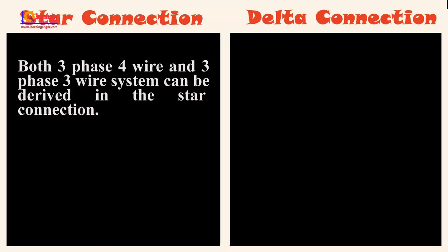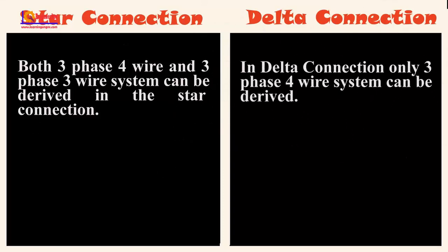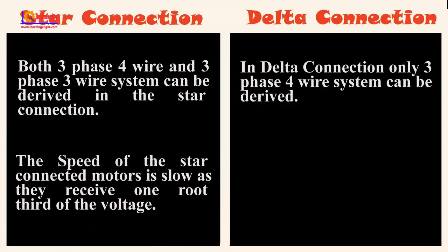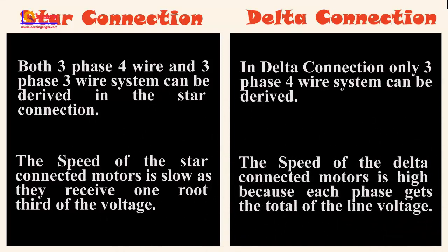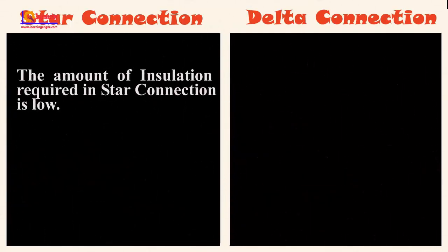Both three-phase four-wire and three-phase three-wire systems can be derived in the star connection. In delta connection, only a three-phase three-wire system can be derived. The speed of the star-connected motor is slow as it receives one over root 3 of the voltage; the speed of the delta-connected motor is high because each phase gets the total line voltage.